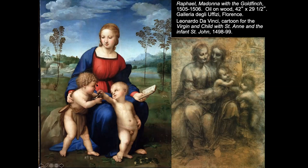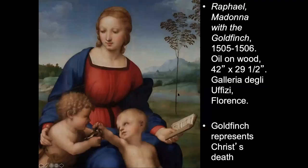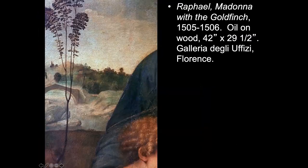The goldfinch is a key symbol: goldfinches root around in thorns to get their food, so they're associated with Jesus and the crown of thorns. Even as a baby, Jesus is embracing the sacrifice that John is handing to him. When you get in close, you can see Leonardo-type sfumato — not quite as pronounced as Leonardo's, but not the hard lines of early Renaissance work. In the background there's a bridge, some trees, and more sfumato getting smoky.